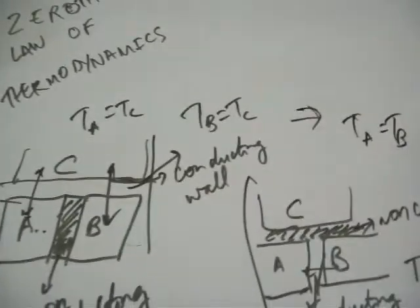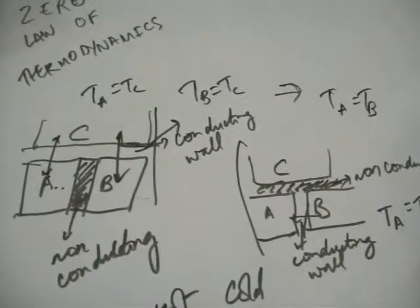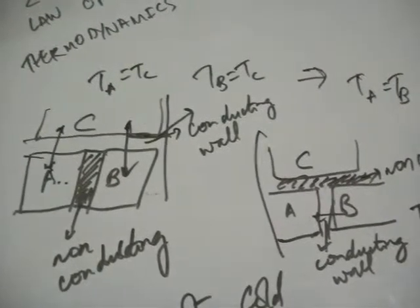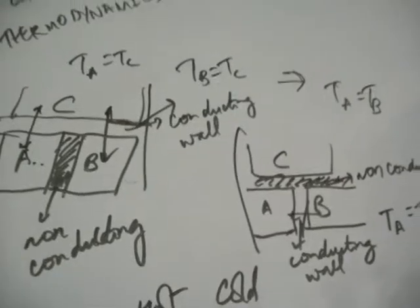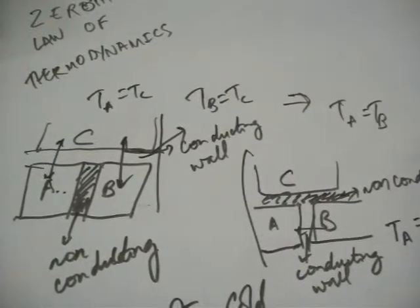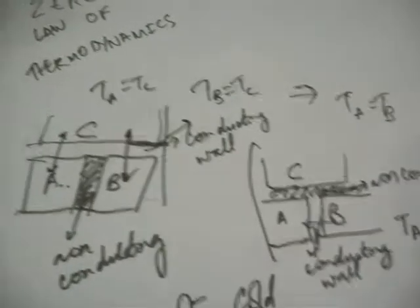This is a very common sense thing, but it is there, the zeroes law of thermodynamics, and this brings us to the conclusion that if two vessels are in thermal equilibrium, then the temperatures are equal. It implies that the temperatures are equal. Thank you.